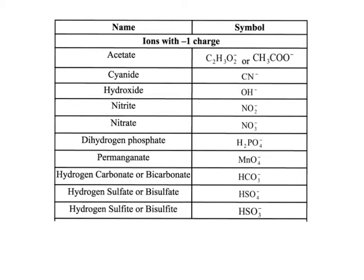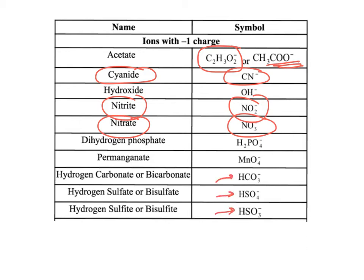This is going to be your first quiz. These are some polyatomic ions that all have a negative 1 charge. Cyanide is CN-. NO3- is nitrate, and NO2- is nitrite. Notice that nitrite has one less O than nitrate, and the only way to really get around this is to memorize them. Acetate is normally written one way, though sometimes you'll see another form. A couple of these have two names — for example, hydrogen sulfite and bisulfite refer to the same ion, and you need to know both.